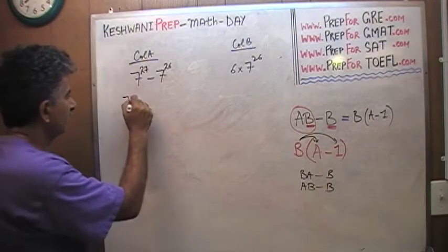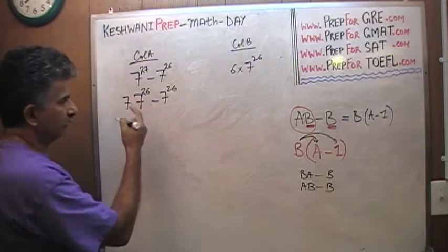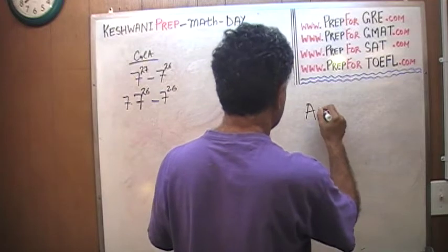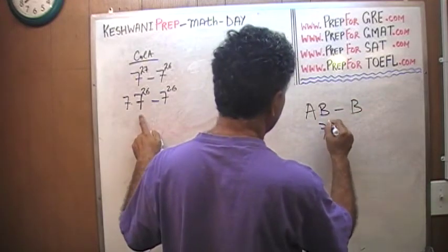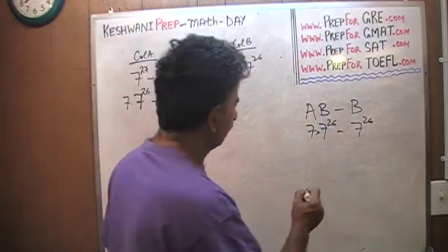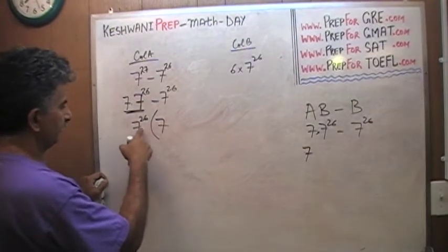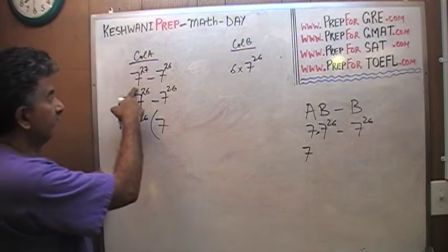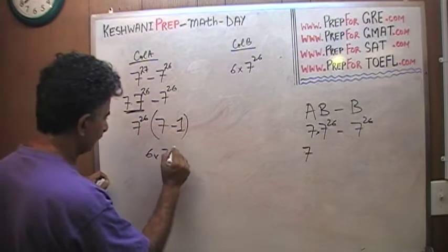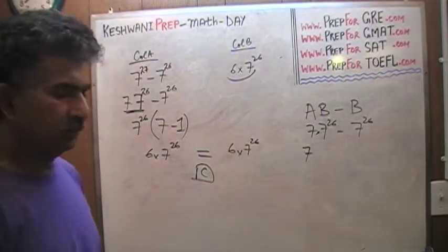So 7 raised to 27 minus 7 raised to 26 can be written as 7 times 7 raised to 26 minus 7 raised to 26. Here, 7 raised to 26 is our B and 7 is our A. Taking 7 raised to 26 common, we get 7 raised to 26 times (7 minus 1), which equals 7 raised to 26 times 6, which is 6 times 7 raised to 26 — exactly what we have in column B. Therefore the answer is C; the two quantities are equal.